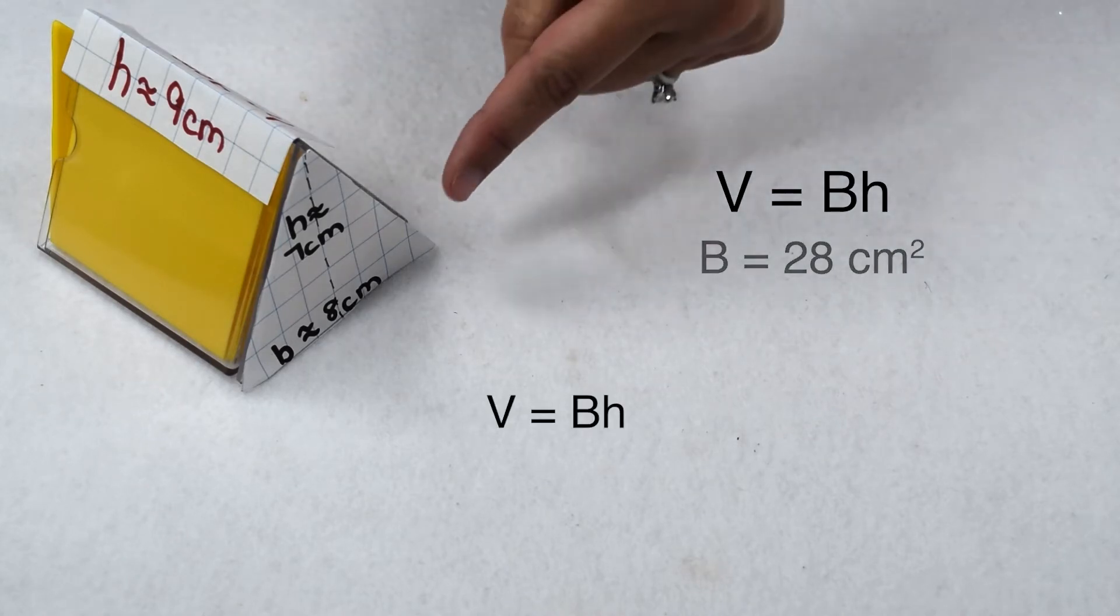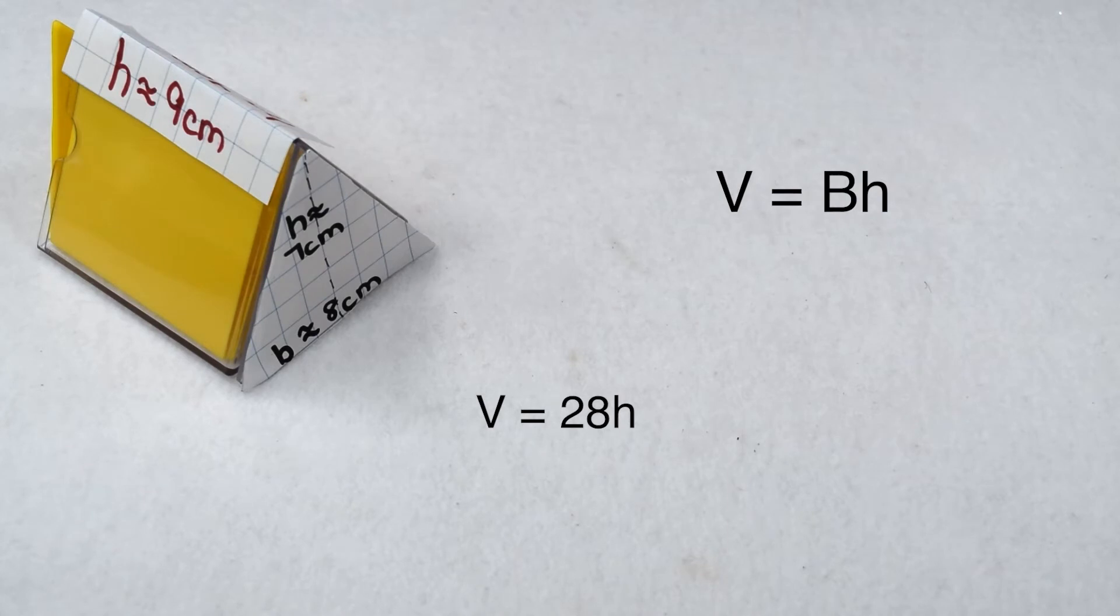So volume is area of the base, or 28, times our height of 9. 28 times 9 is 252, so volume of our prism is 252 cubic centimeters. Volume is labeled to the third power since it's a three-dimensional measurement, and we read it as cubic.